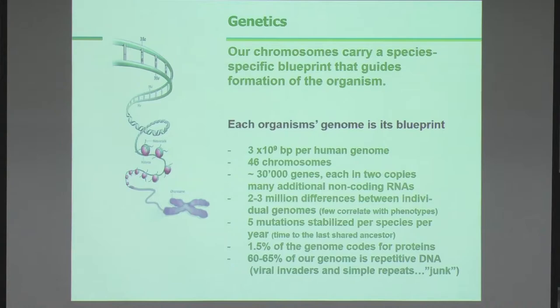Probably most of those differences don't mean much — only five mutations are stabilized per species per year, calculated back to our last common ancestor. Remarkably, very little of your DNA actually encodes for proteins — about one and a half percent — and about 60 to 65 percent of your genome is junk: repetitive DNA and viral remnants of invaders that are not important for your survival, but they're there.